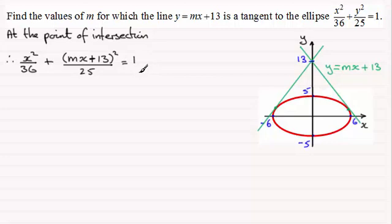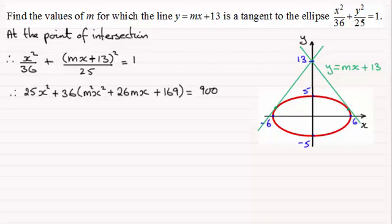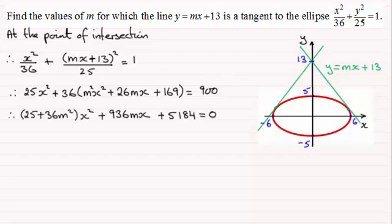To save time I'm going to run through the steps which I've prepared earlier. Multiplying throughout by 36 and 25, we get 25x squared plus 36 times — expanding the bracket mx plus 13 — to give m squared x squared plus 26mx plus 169, and that equals 900. Next, expanding the bracket and taking 900 from both sides gives us our quadratic.